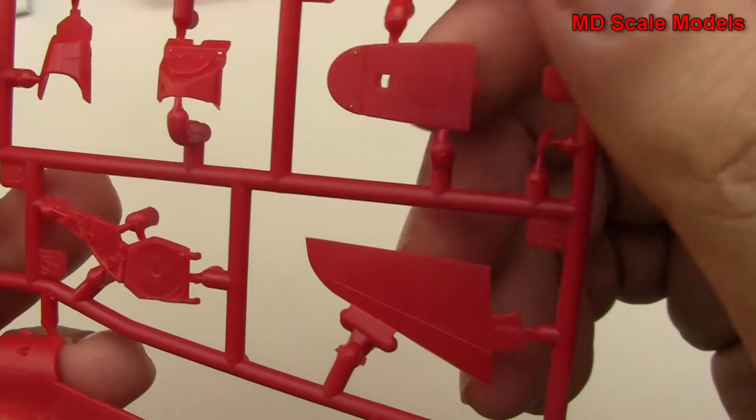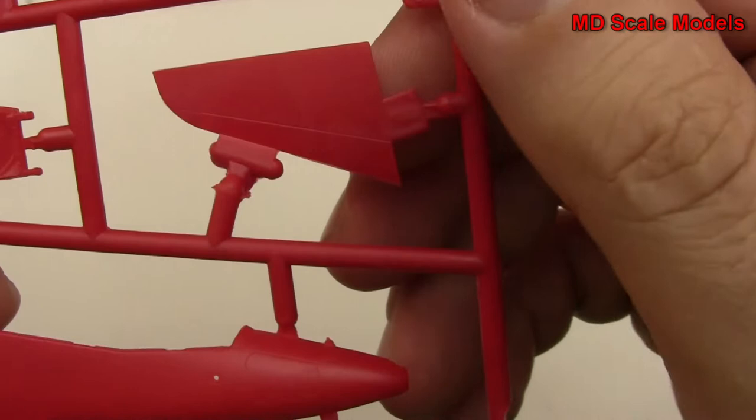Here's our elevator and nose gear, probably air brakes there. And here we have, looks like the pod. I don't know what that's for, we'll have to look and see.